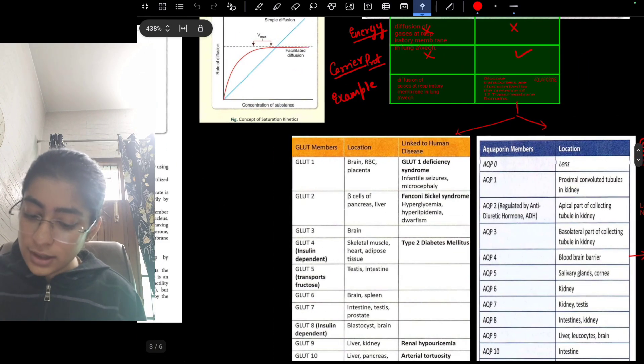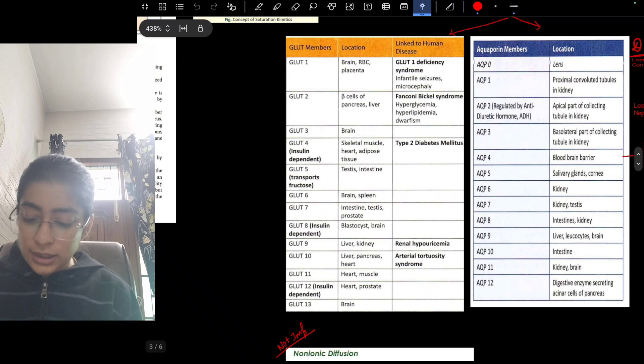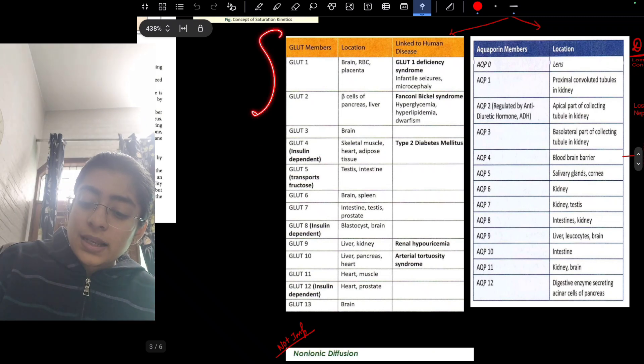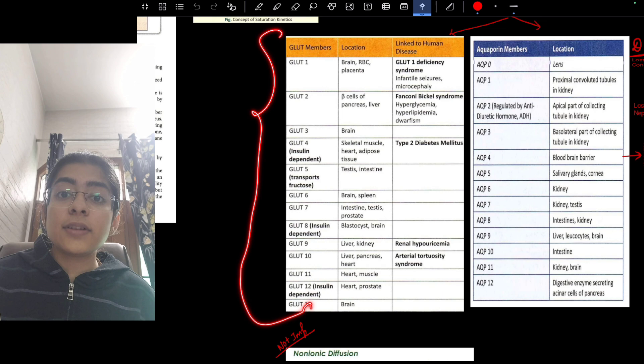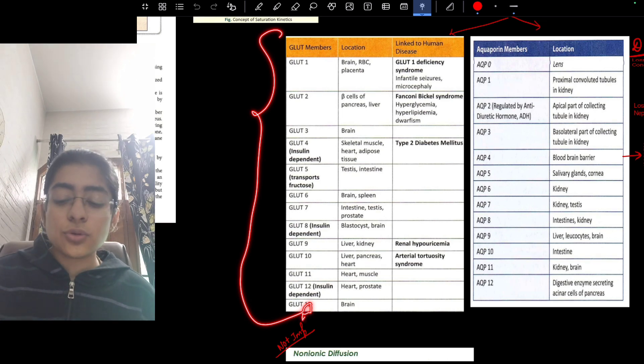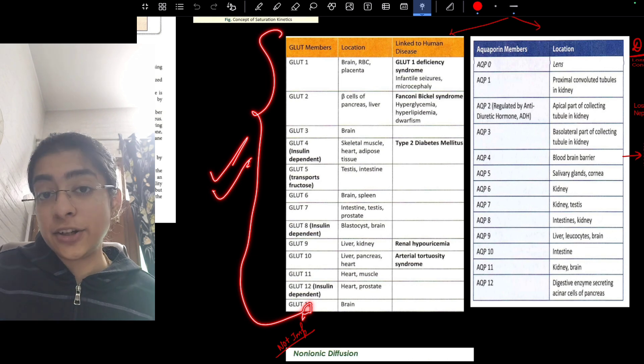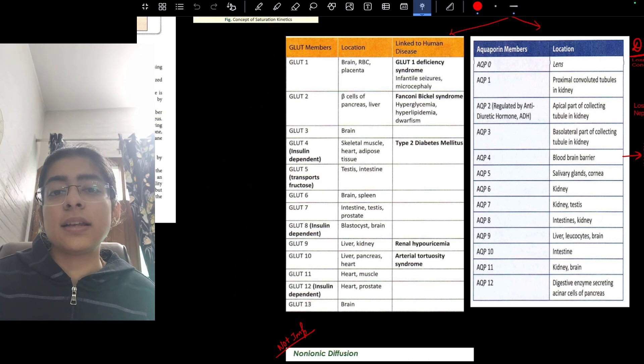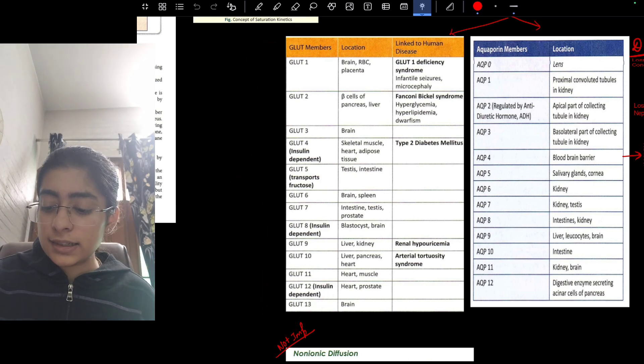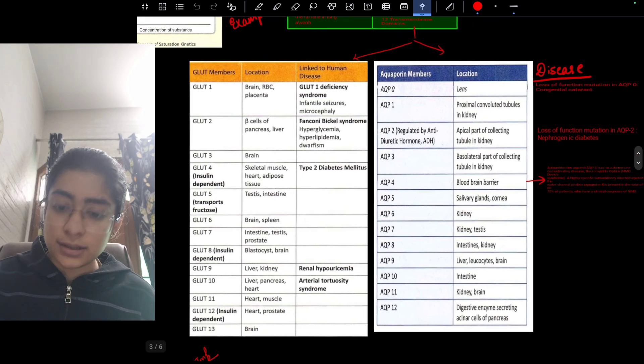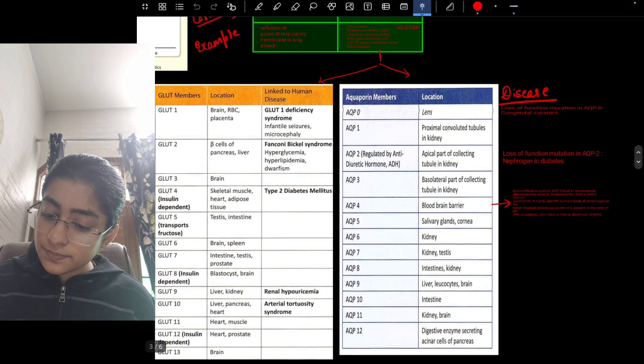In facilitated diffusion it is dependent on carrier protein so it will saturate after some time. That is why the graph is like this. This is an important graph given in Guyton. Simple diffusion is not dependent on any carrier so it will continue independently. It is a straight line. GLUT transporters: it is not exactly asked here but it is given in the first chapter. You can refer to it afterwards when you will complete your syllabus from GIT and endocrine chapters.